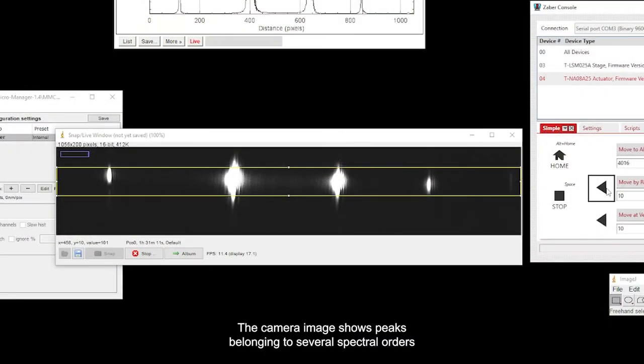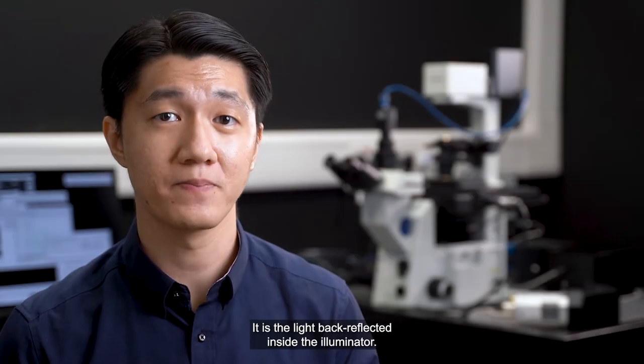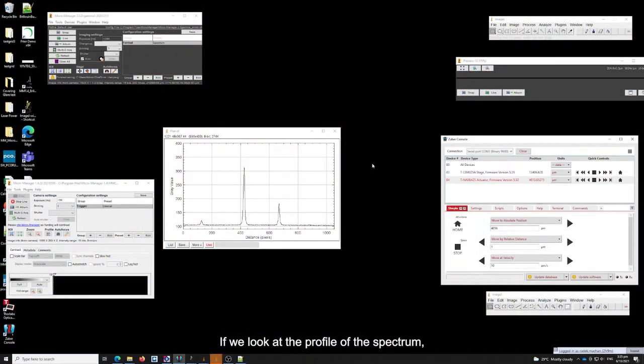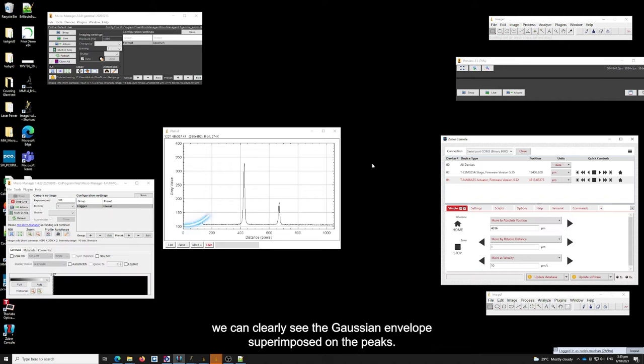The camera image shows peaks belonging to several spectral orders, with a Gaussian envelope superimposed. The spectrum we see consists of Rayleigh peaks only. It's the light back-reflected inside the illuminator. If we look at the profile of the spectrum, we can clearly see the Gaussian envelope superimposed on the peaks.